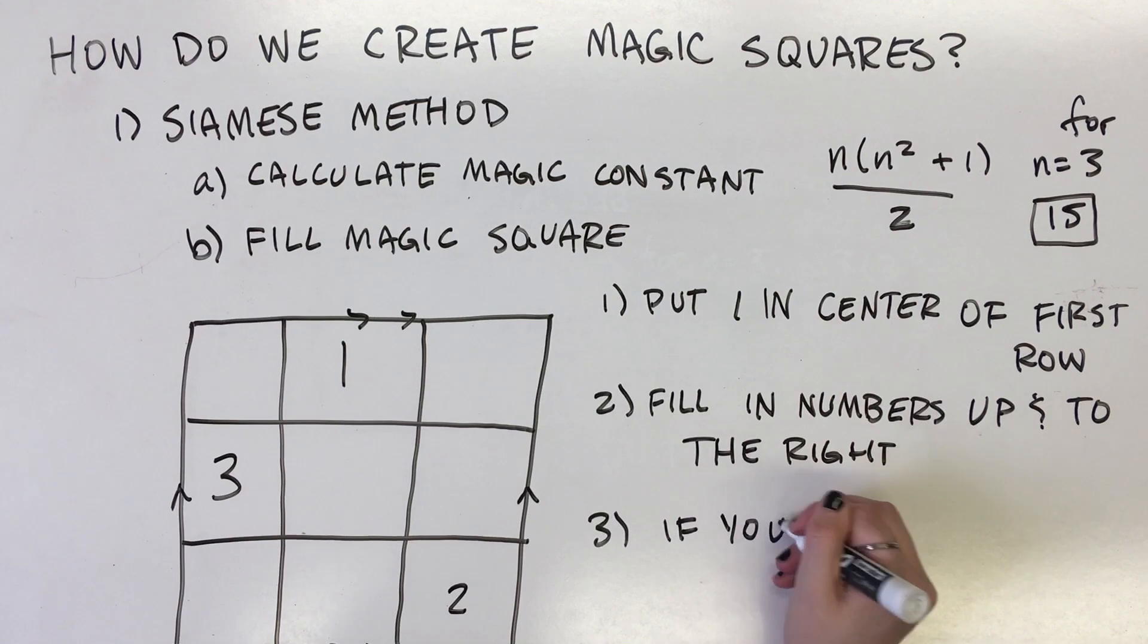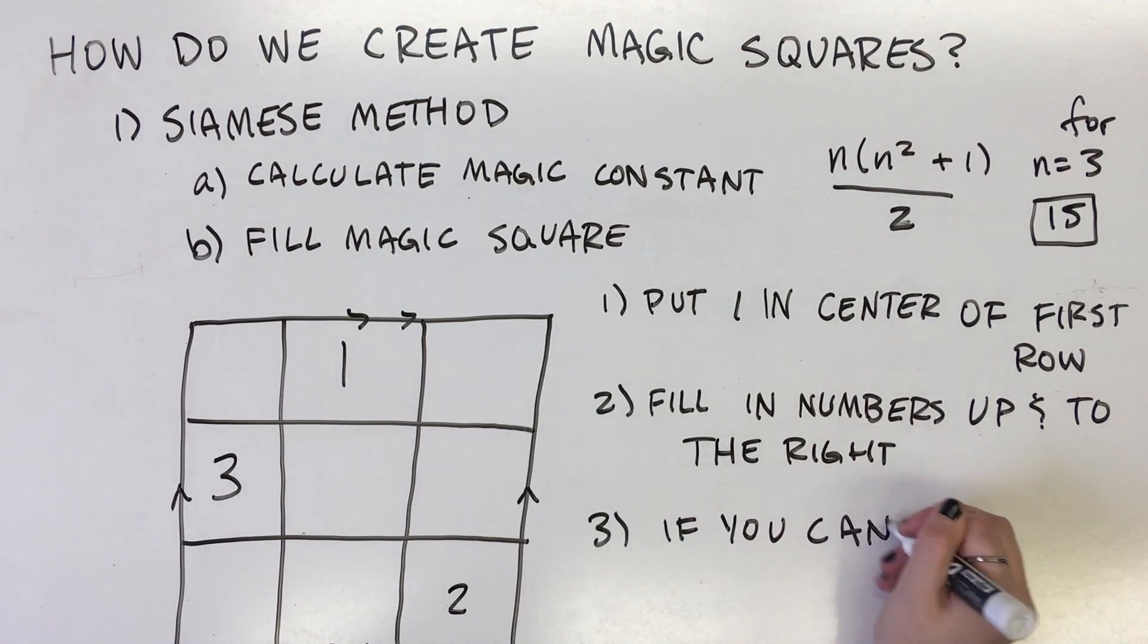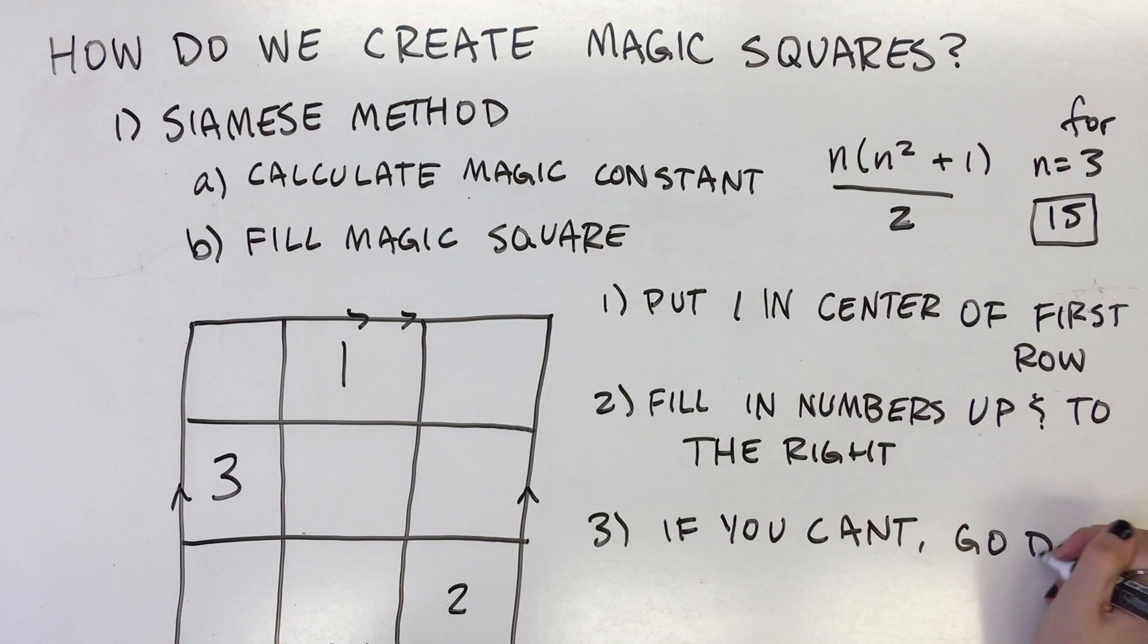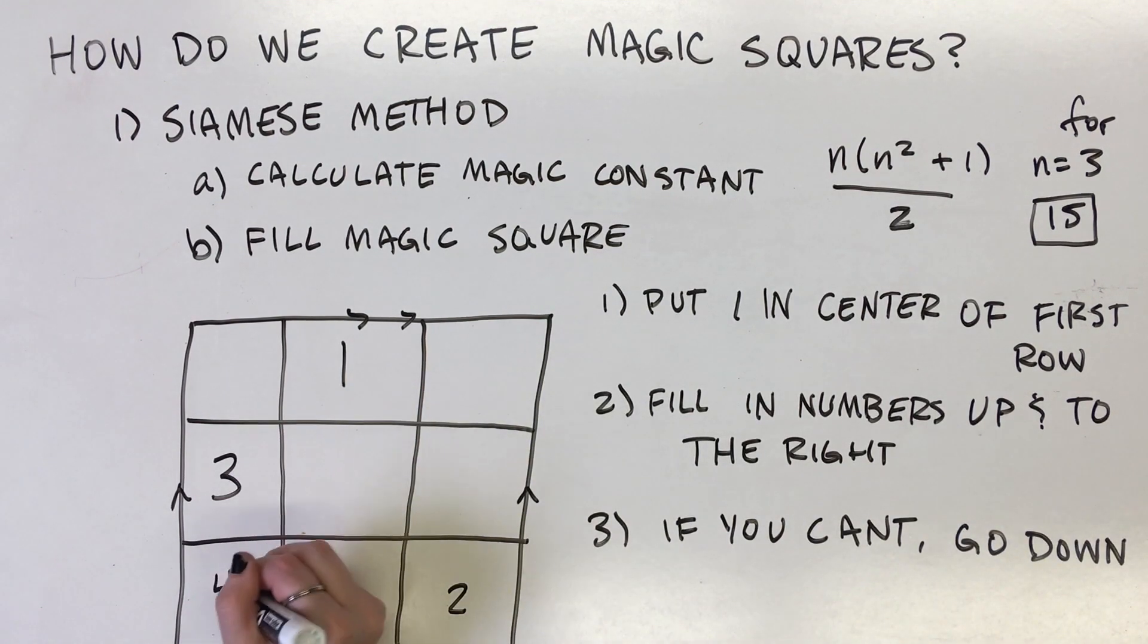Second, if the movement takes you to a box to the right of the magic square's rightmost column, remain in that box's row, but place the number in the furthest left column of that row.